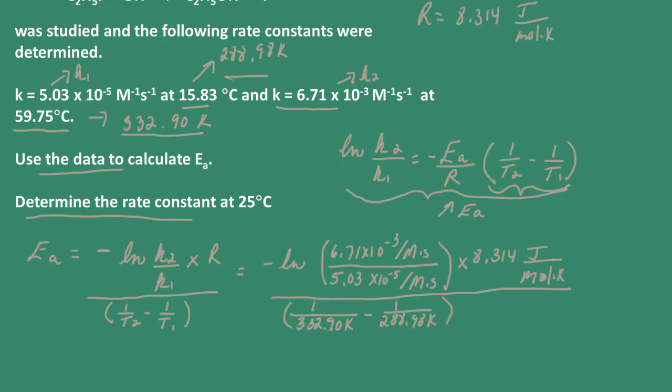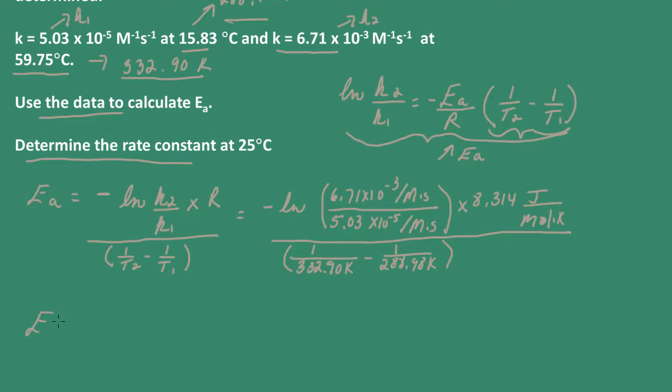I'm going to do the numerator first. So activation energy, don't forget that negative sign. What we get here is 40.68. Now I'll take care of the denominator, which equals times 10 to the negative 4. Our activation energy then is equal to 89,105 joules per mole, and this would be 89.1 kilojoules per mole. So we have our activation energy.